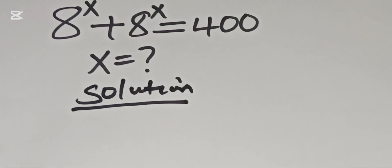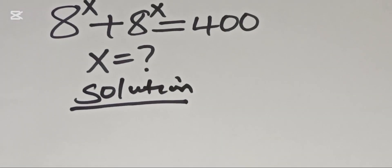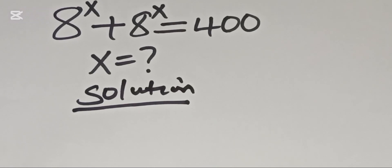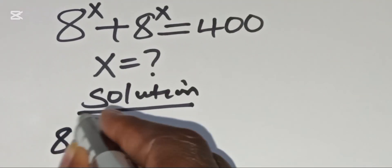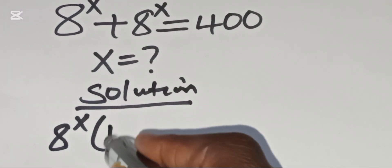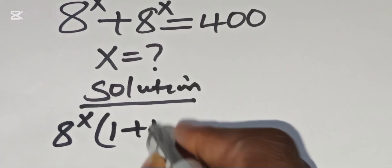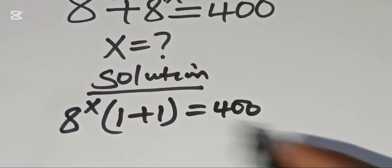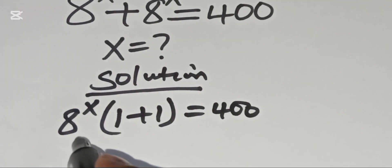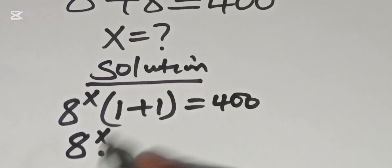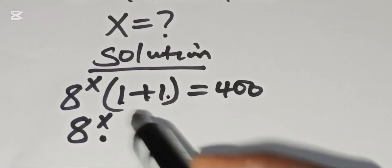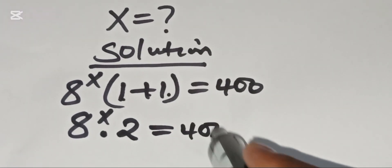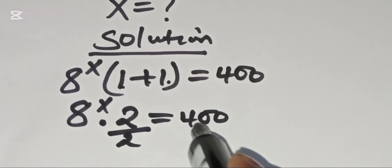From here, you can see that 8 raised to the power x is common, so we can factor out 8 raised to the power x, giving us 8^x times (1 plus 1), which equals 400. Now, 1 plus 1 is 2, so we have 8^x multiplied by 2 equals 400. We divide both sides by 2.